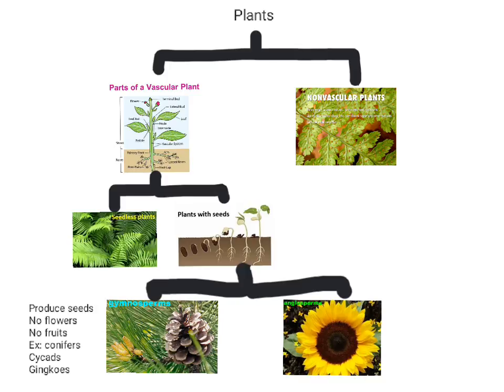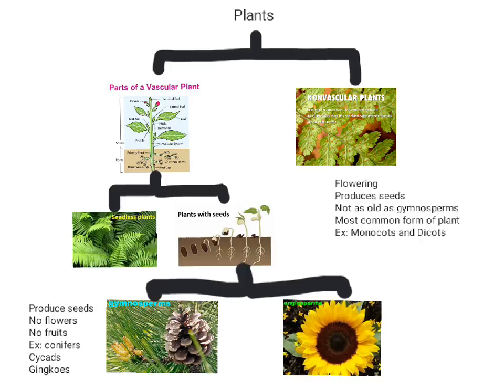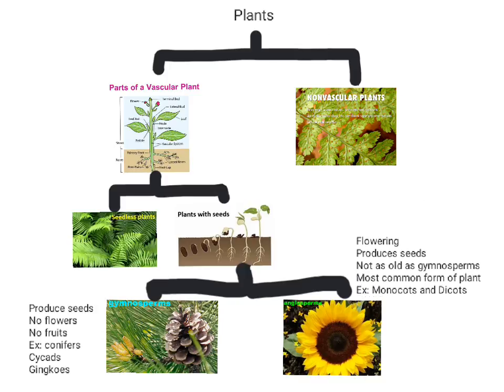Angiosperms are flowering plants that produce seeds enclosed in a fruit. Angiosperms have not existed on earth as long as gymnosperms have, but they are now the most common form of plant life on earth. There are two main groups — monocots and dicots — which we'll get into a little bit later.